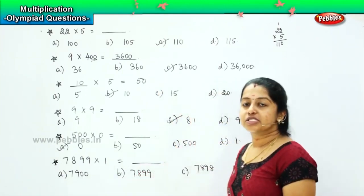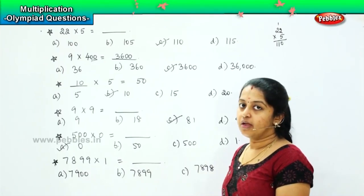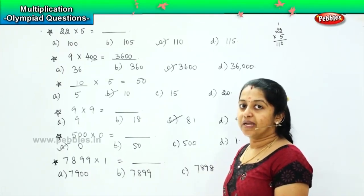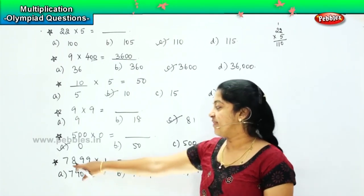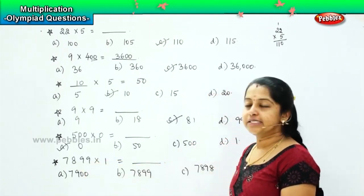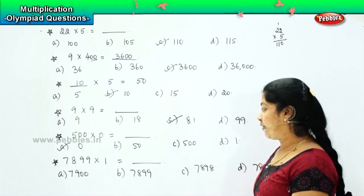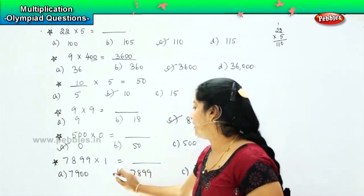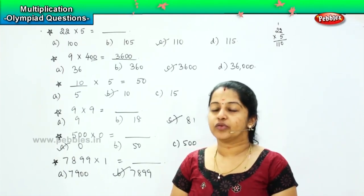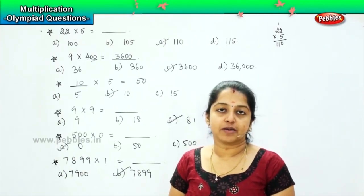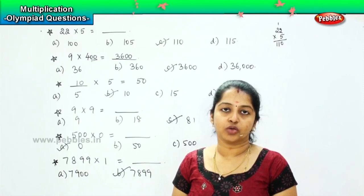So this talks about our second property of multiplication. Whenever you multiply anything by 1, the answer will be the number itself. So 7899 multiplied by 1 is, very good, it will be 7899, that is option B. Clear. So I think you guys are finding it interesting to solve the sums. Shall we do some more?